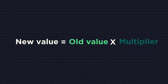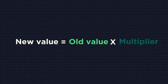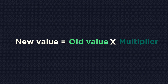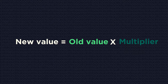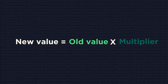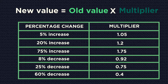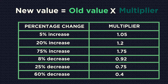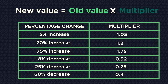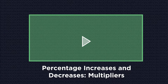This is a really simple way of calculating percentage changes. The new value is the chronologically more recent value, the older value, and then the multiplier, which is a decimal number. If you cannot remember how to find multipliers, watch this video first.